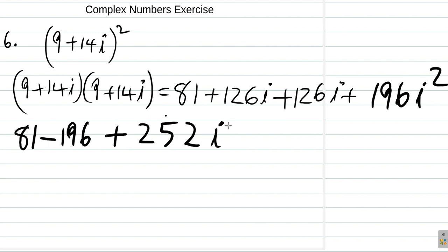Then 81 minus 196, how much is that? We work it out. Okay, so that will be negative 115 plus 252i, right?